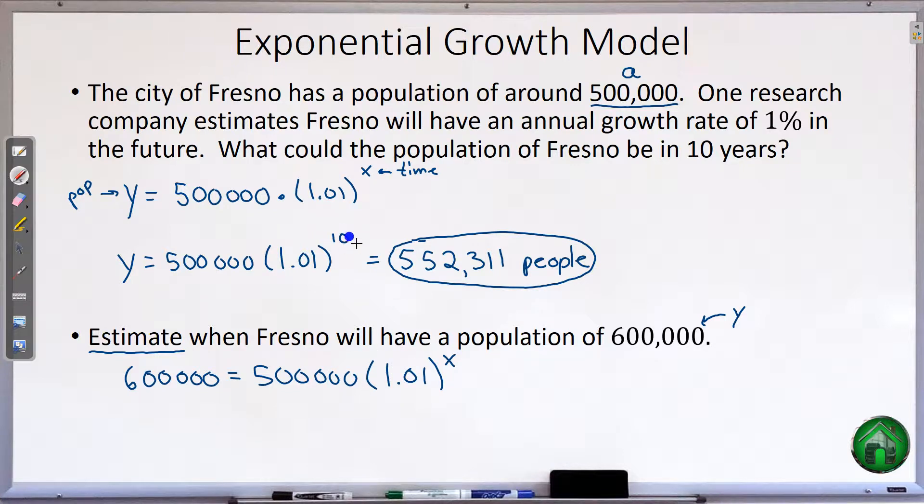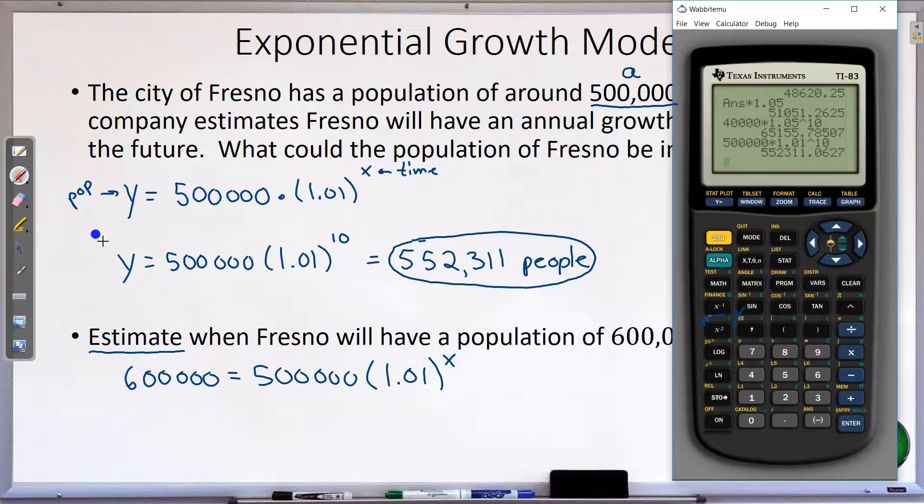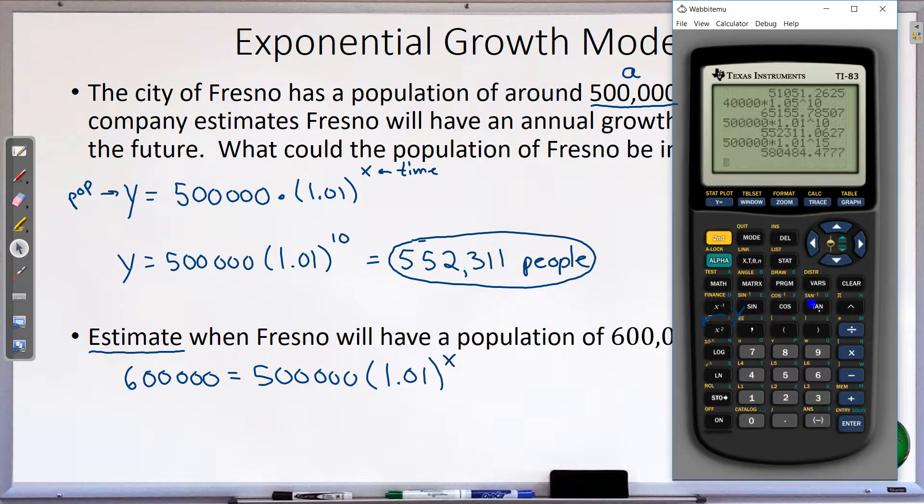So right now, all we can do is estimate by doing a little guessing and checking. We know 10 years isn't long enough because that's only 552,000. So we might try 15 years or 20 years and just start to guess and check. And the calculator has a really good way to do that. So you type it in once, times 1.01 to the power of, so now I'm going to take a guess. Let's try 15. Will 15 years be long enough? So that gets me to 580, not long enough. So instead of typing the whole thing in, just hit second, enter. That brings up the whole command again. Then go back, and instead of 15, let's type in 20.